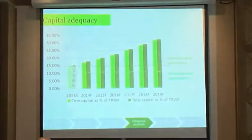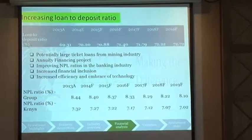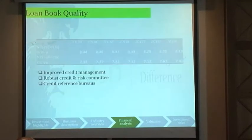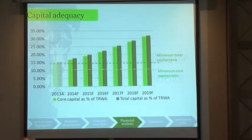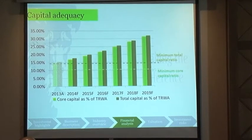Can you tell me where you've used the CBK data in your slides? Show me the slide. I'm getting the minimum capital adequacy ratios — we got that from the CBK reports, from the prudential guidelines.